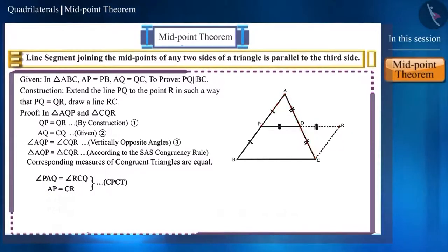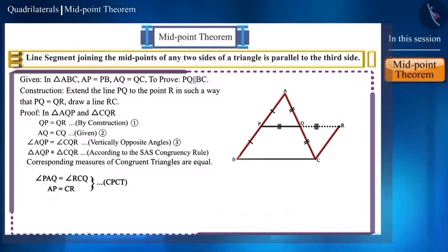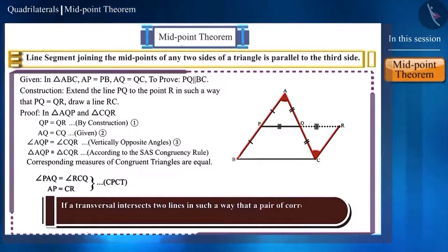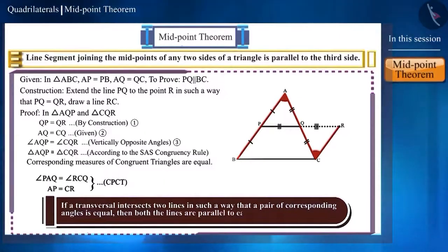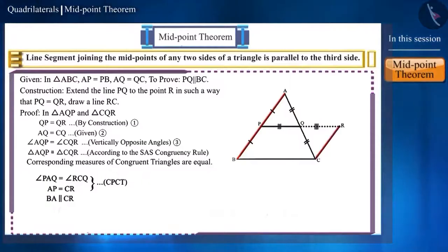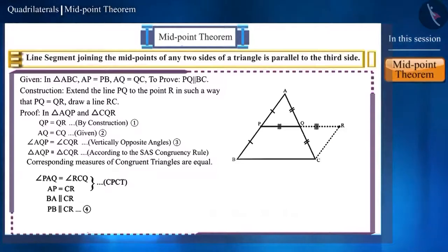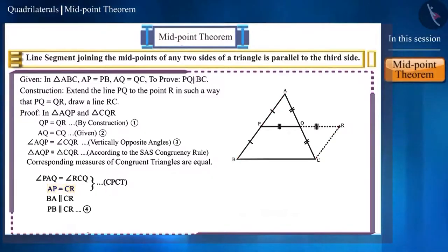These two angles are alternate angles, formed by the intersection of the sides BA and CR with the transversal AC. We know that if a transversal intersects two lines such that a pair of alternate angles is equal, then both the lines are parallel to each other. Hence, the side BA will be parallel to the side CR. Since points B, P and A are on the same line, we can say that the side PB will also be parallel to the side CR. We are given that side AP equals side PB and side AP also equals side CR, hence the sides PB and CR will also be equal.